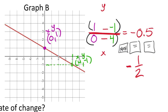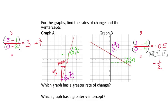That's all the information we need for graphs A and B. Which graph has a greater rate of change? Graph A had a rate of change of 3, and graph B had a rate of change of negative 1/2 or negative 0.5. Ignoring the negatives, 3 is a bigger value, so graph A has the greater rate of change.